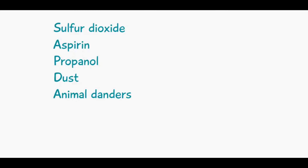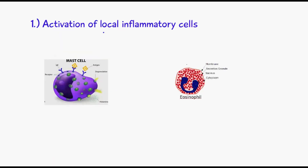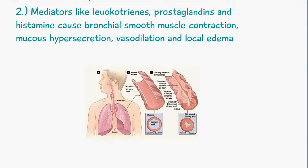To go into slightly more depth regarding the actual pathophysiology of asthma: we have an allergen which causes activation of local inflammatory cells like mast cells or eosinophils. We then have mediators like leukotrienes, prostaglandins, and histamine which cause bronchial smooth muscle contraction, mucous hypersecretion, vasodilation, and local edema.